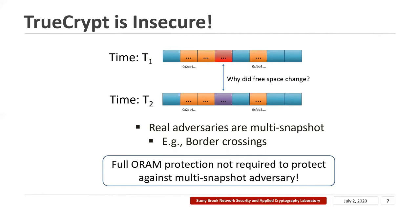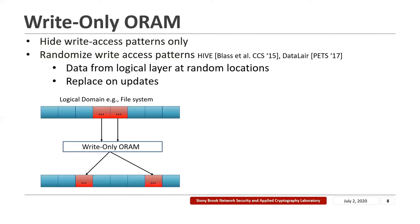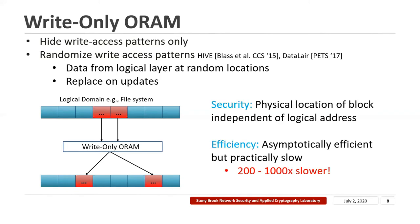To protect against multi-snapshot adversaries, we do not require full ORAM protection. Instead, we can use a simpler and more efficient solution called a write-only ORAM. A write-only ORAM hides only the write access patterns. A simple way to build a write-only ORAM is to randomize the write access patterns — you use a write-only ORAM layer that places data from the logical layer at random locations on the device. Every time you update a particular data item, it is relocated to a new random location. So the physical location of blocks on the device are random and independent of their logical addresses, meaning an adversary cannot correlate successive accesses.